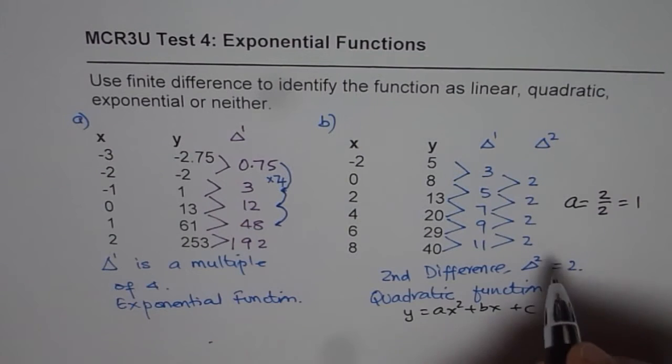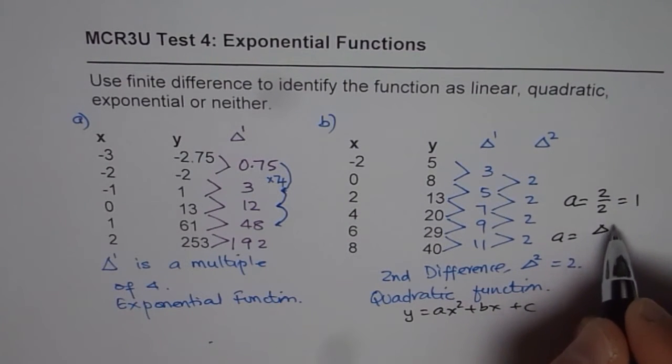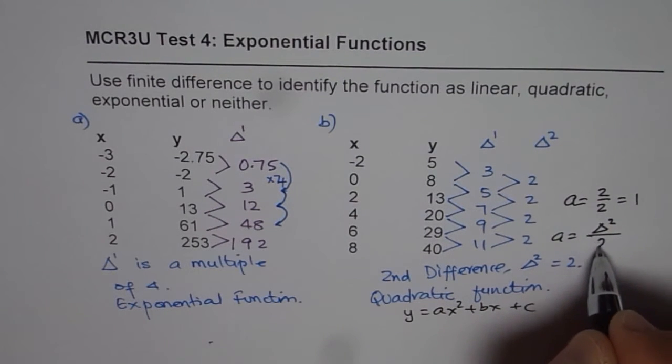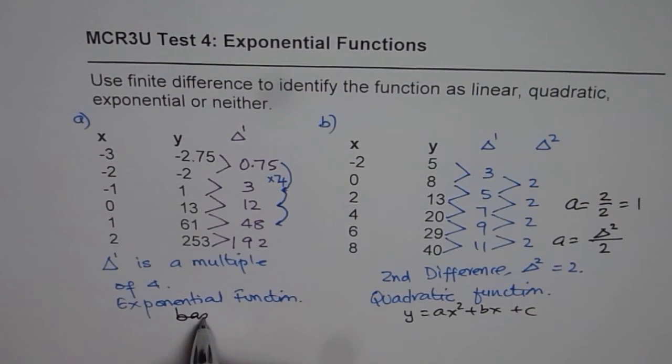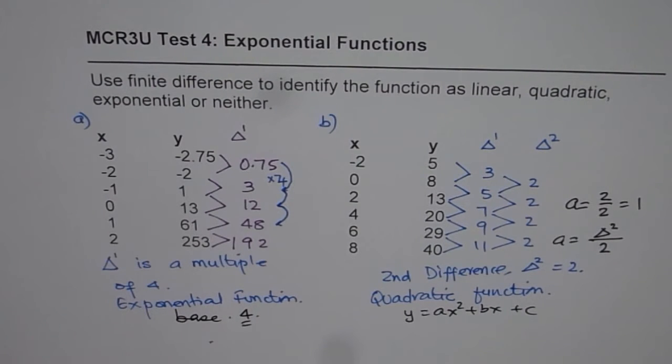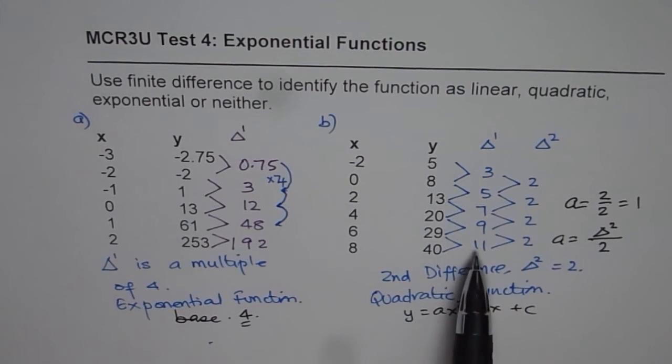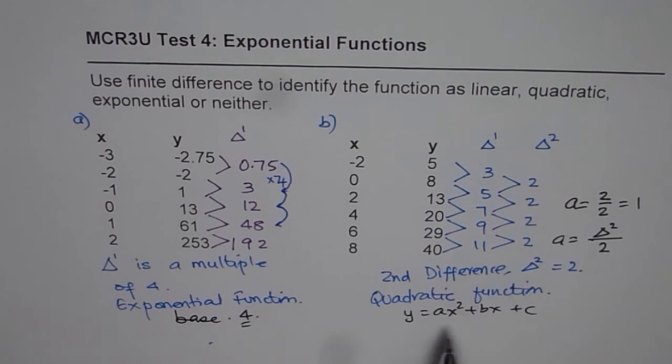In general, a will be equal to the constant second difference divided by 2. In this case of an exponential function, we normally have an exponential function to the base, and the base here for the exponential function is the multiple, which is 4 for us. So that also gives you an idea about the function itself. If you have to write the equation of the function, you can do so by utilizing these values. I hope that helps. Thank you.